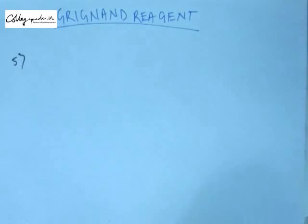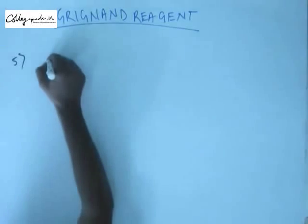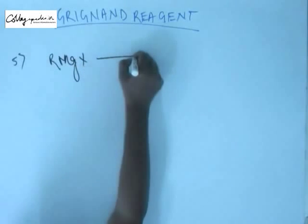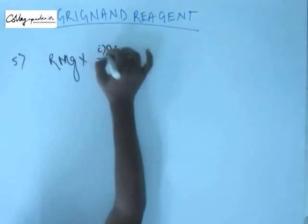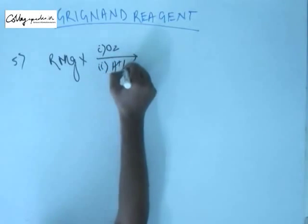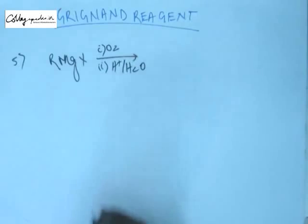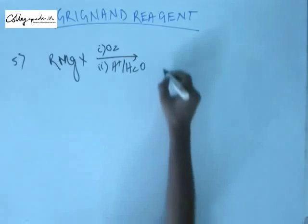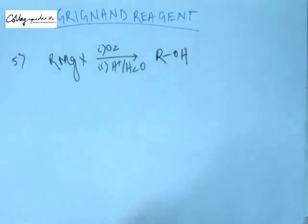The fifth major reaction of Grignard reagent is the reaction with oxygen. When we have a Grignard reagent RMgX and we add O₂ — when we make the Grignard reagent react with oxygen and the reaction is over — we hydrolyze the formed anion. When we do this, we get an alcohol with the same number of carbons as we had in R. So basically, when you take RMgX, you will get ROH.